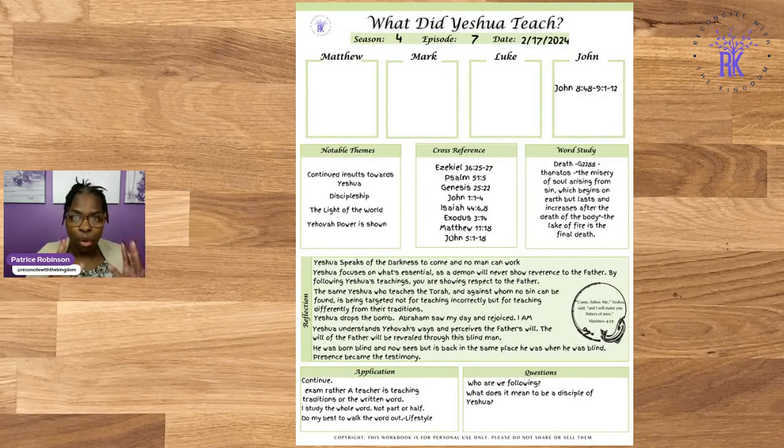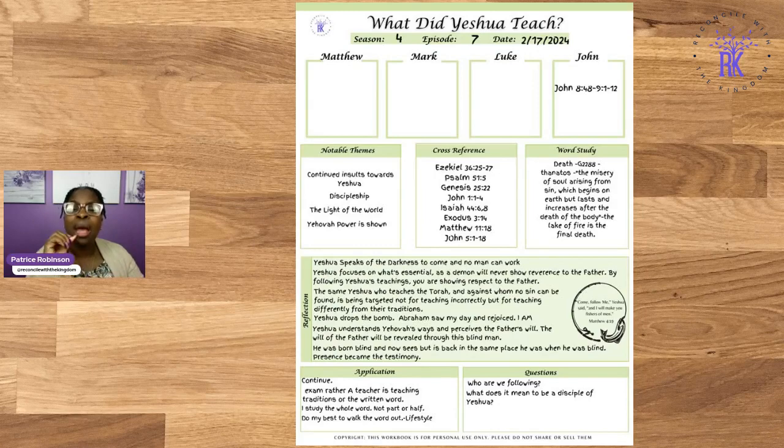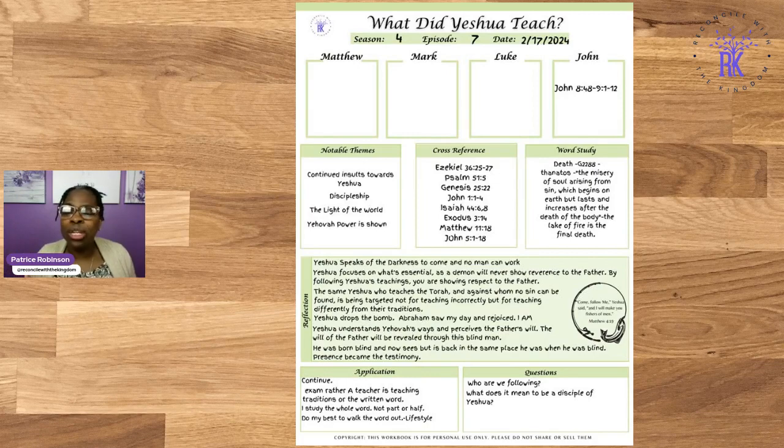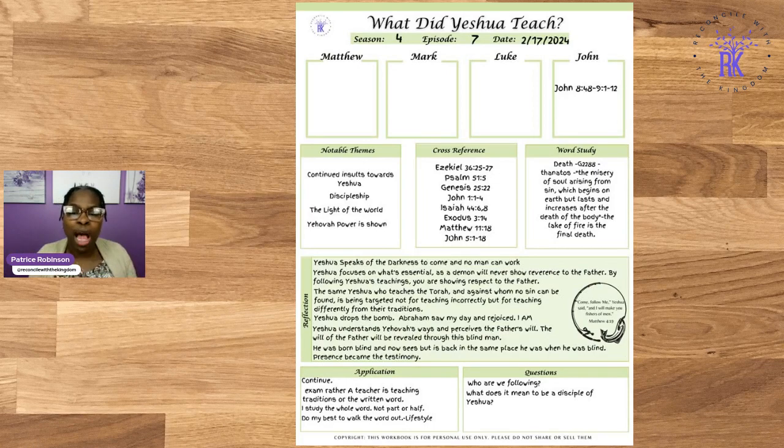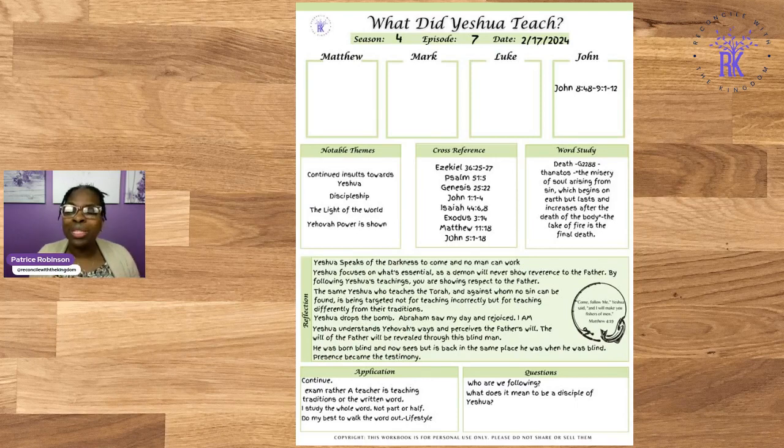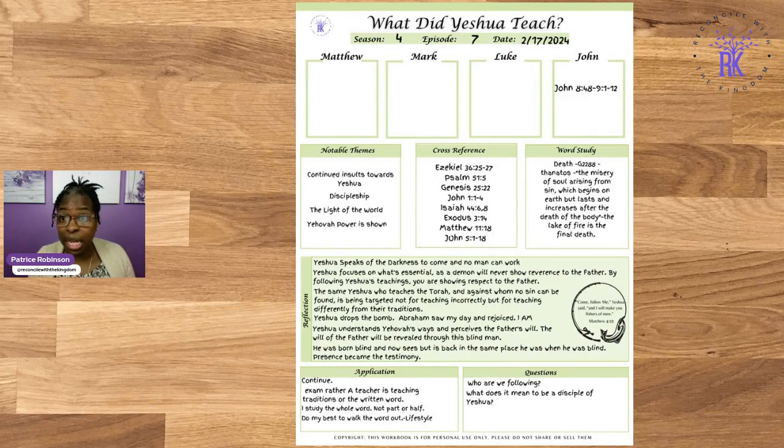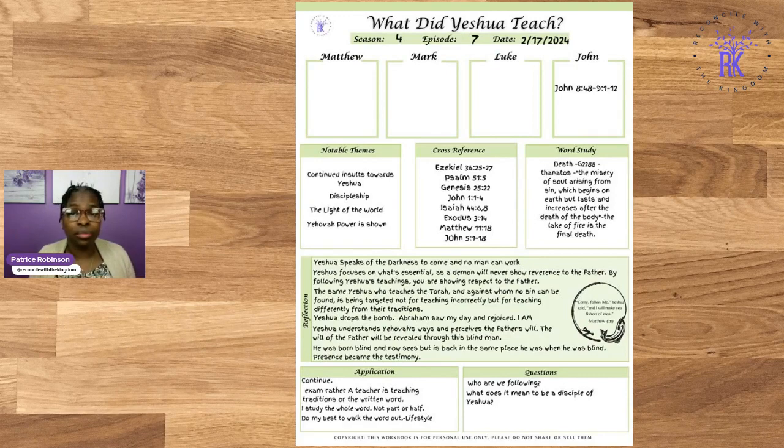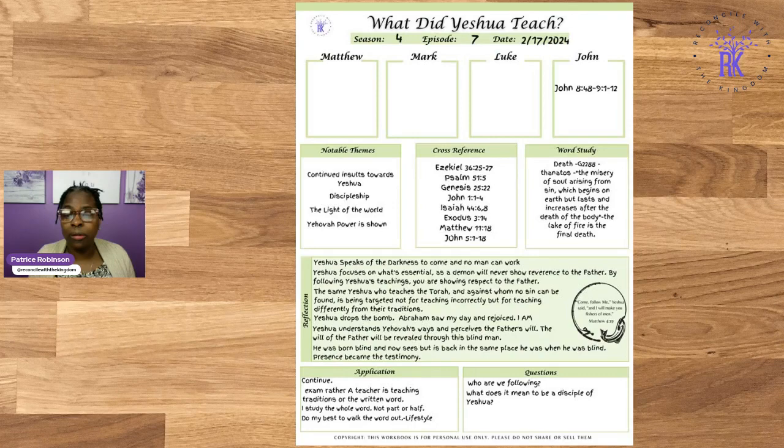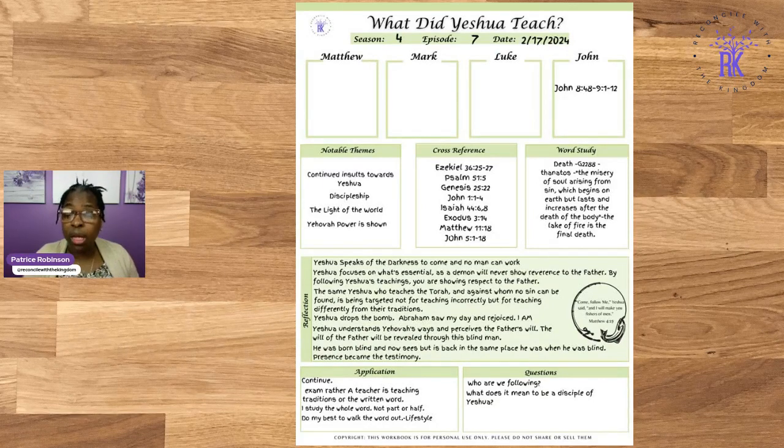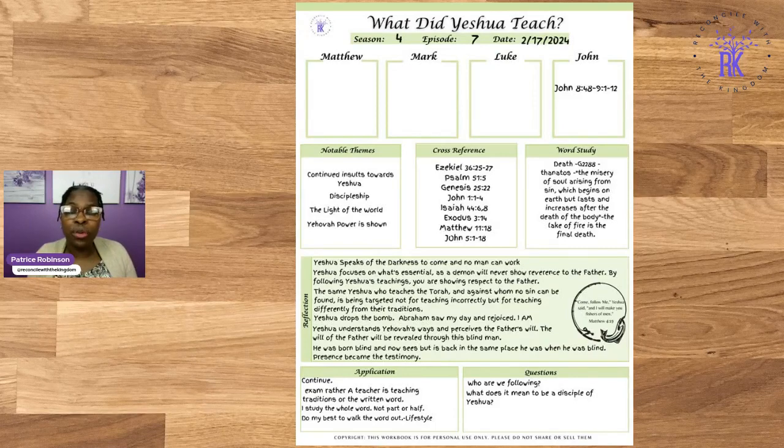So most definitely, this is what was going on in my mind when I read about that. Now Yeshua is focused on what is important. This shows what is important because they're claiming and comparing him as being a demon and someone from Samaria living in sin. This is because people begin to believe in him. But we know that a demon would never reverence the Father. By following Yeshua's teachings, you are showing respect to the Father because Yeshua's teachings come from the Father. That same Yeshua who they can't find sin in, remember he said point out the sin. He teaches the Torah, but they target him. He is targeted not for teaching incorrectly according to Jehovah, but for teaching different from their traditions.